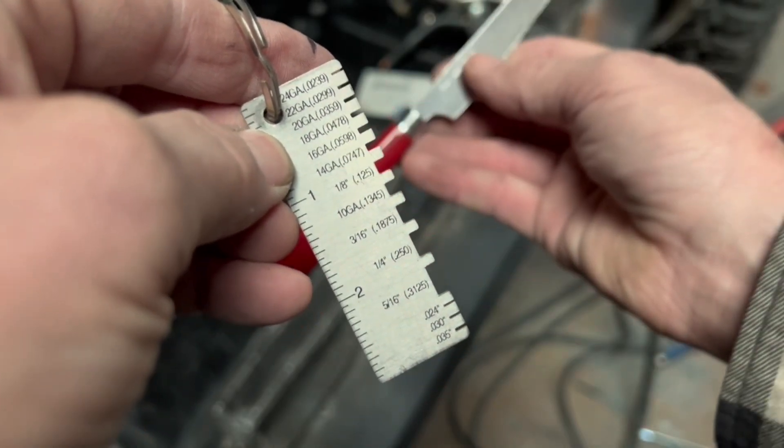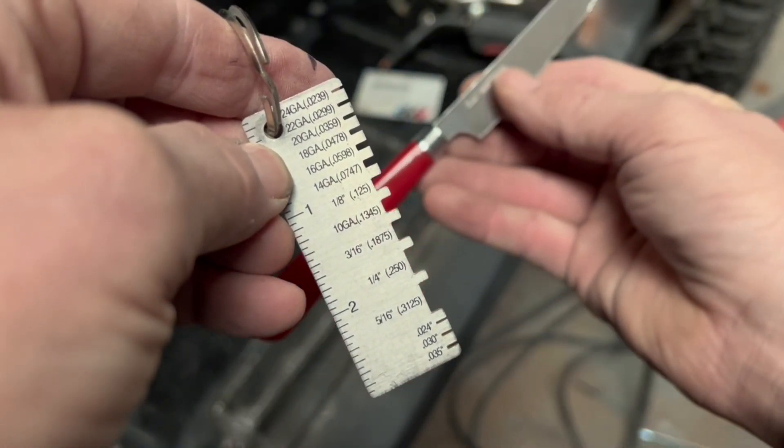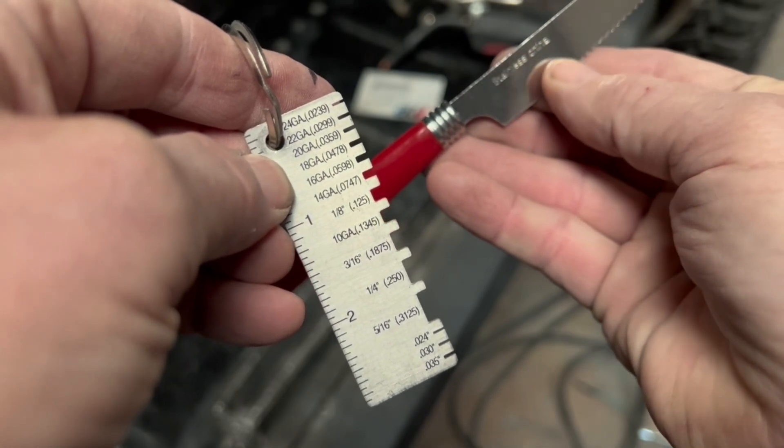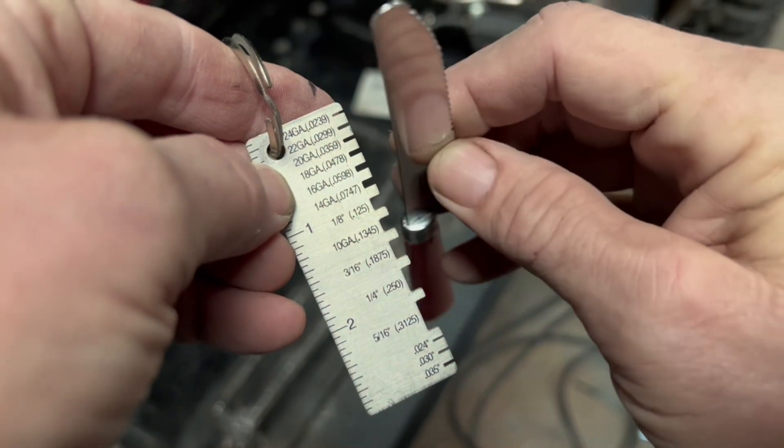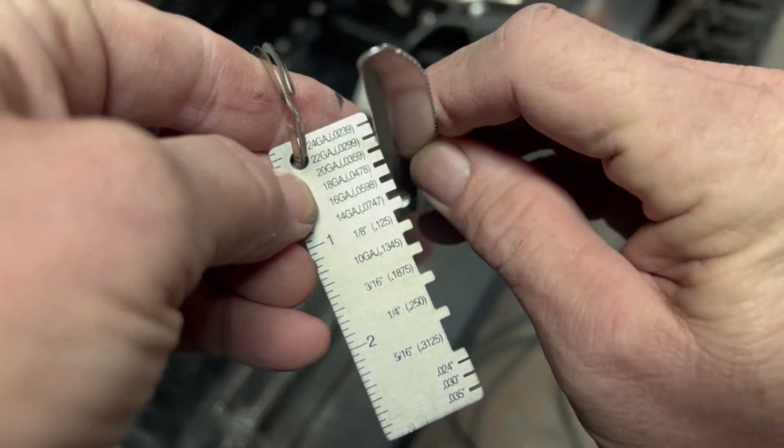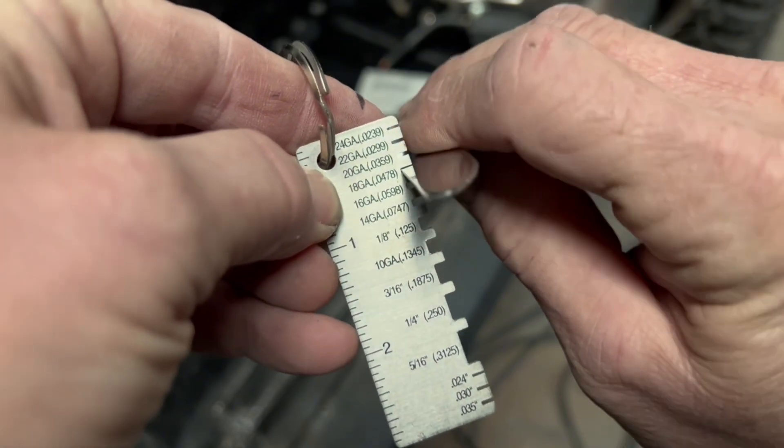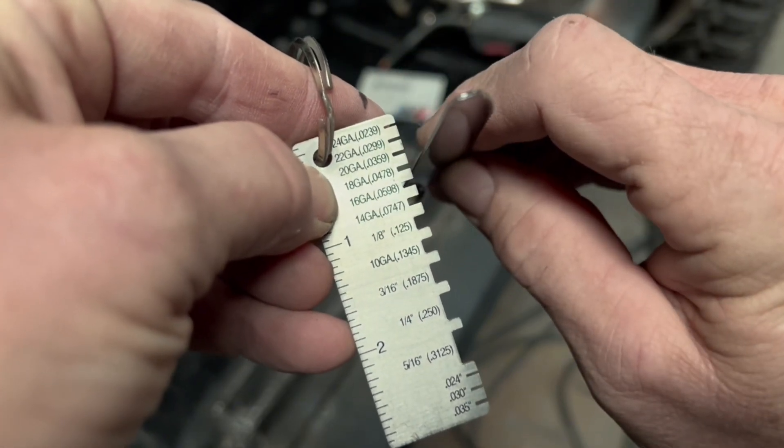These dollar store kitchen knives I'm going to be welding together are like stainless steel. They're like 19 gauge. They won't slide into 20, but they're real loose in the 18 gauge slot. So we're going to call them 19 gauge.